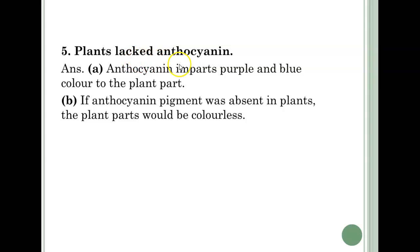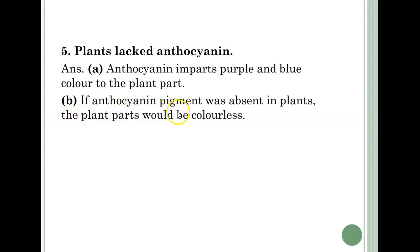Fifth question — Plants lacked anthocyanin. Answer A: Anthocyanin imparts purple and blue color to the plant part. B: If anthocyanin pigment was absent in plants, the plant parts would be colorless.